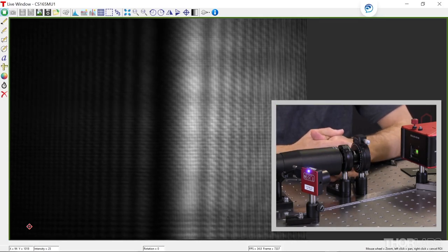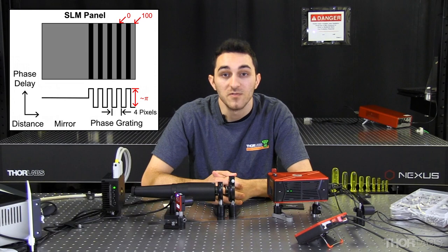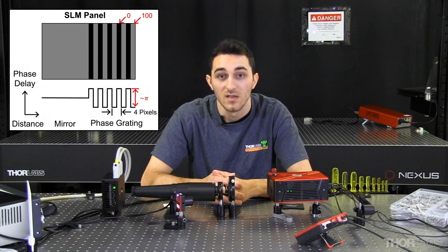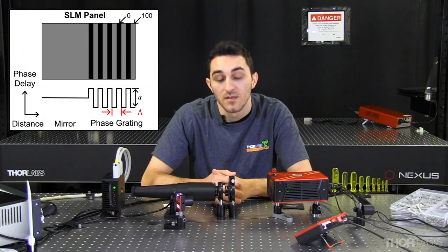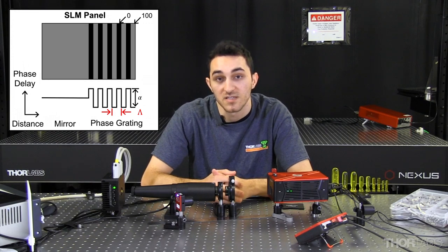The fringe contrast can be further optimized by varying the step height in the phase grading. After trying a few different grayscale values, I found that 0 and 100 provide the best results. Additionally, the grading period may be changed to adjust the distance from the SLM the diffracted and reflected beams will overlap.